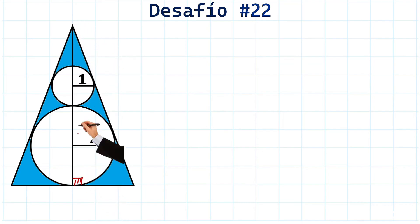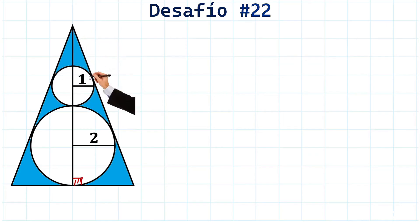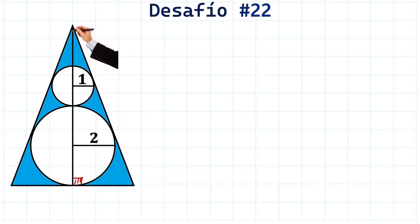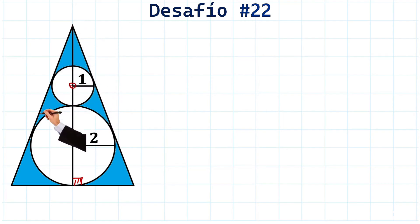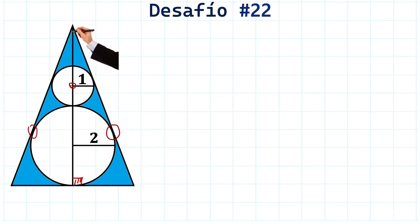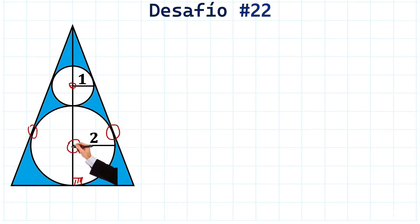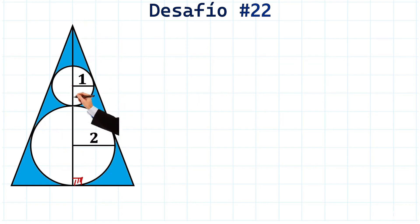You might be wondering why we know that this vertical line passes through the middle. Notice that the two lines from the vertex are tangent to the small circle — for this line to be a bisector, it must reach the center of the small circle, and it indeed does. Similarly, the lines tangent to the large circle mean this bisector also reaches the center of the large circle.